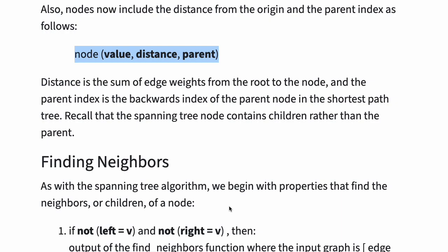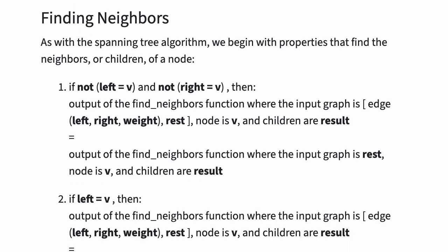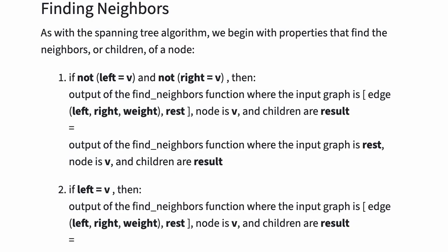Recall that the spanning tree node contains children rather than the parent. As with the spanning tree algorithm, we begin with properties that find the neighbors or children of a node. Property 1 says: if left is not equal to v and right is not equal to v, then the output of the find neighbors function where the input graph is edge(left, right, weight) and the rest, node is v, and children are result, is equal to the output of the input graph.